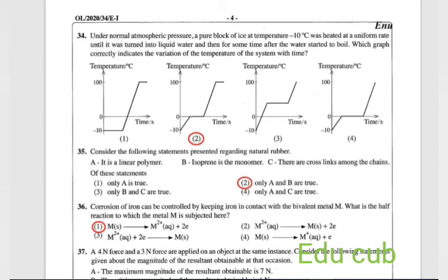Question 35: consider the following statements presented regarding natural rubber. It is a linear polymer. Isoprene is the monomer. There are cross links among the chains. Answer is the second one. It is a linear polymer and isoprene is the monomer.